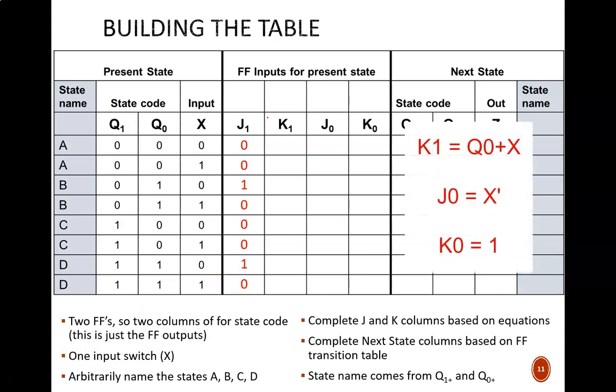The equation for K1 was Q0 or X, which produces this column. J0 is simply X prime, so this column is always the complement of the X column. And K0 is the simplest of all. It equals one all the way down.